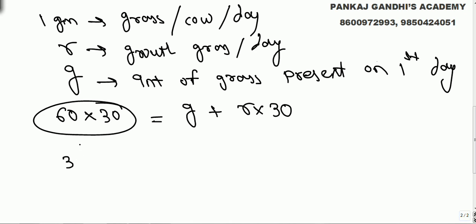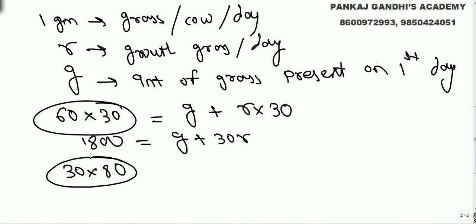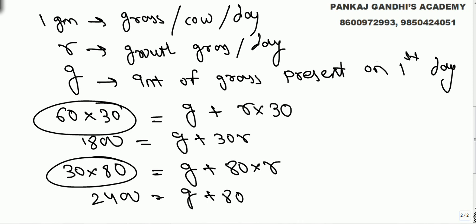30 cows eating for 80 days gives 30 × 80 = 2400 grams total. This grass comes from g on the first day plus growth for 80 days. So our second equation is: 2400 = g + 80r.